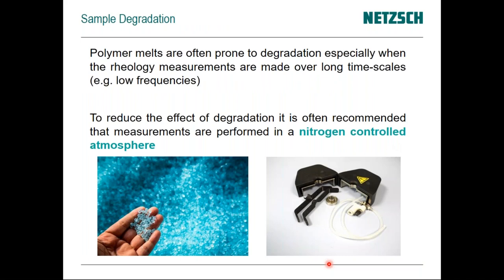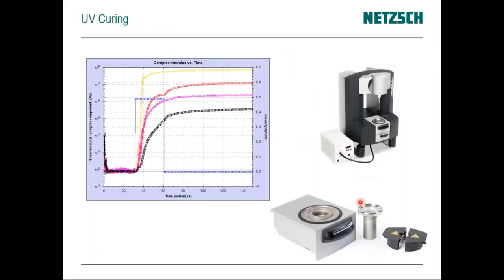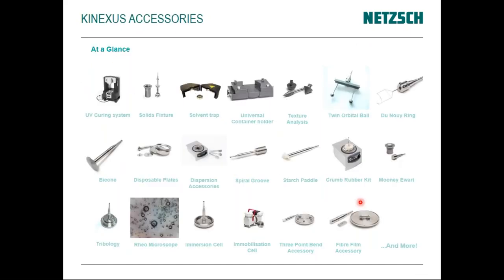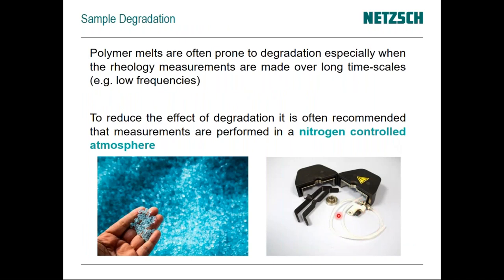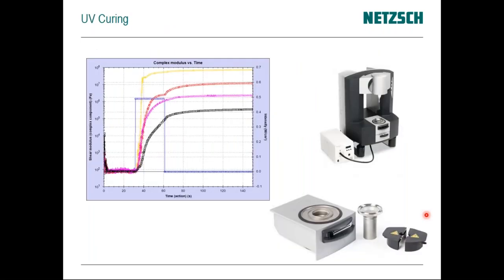Sample degradation can be an issue — measuring polymers at high temperature can cause oxidation. It's a good idea to purge the hood with nitrogen using the inlet nipples on the side of the cover. You'd use a needle valve with about one bar of nitrogen, purging very slowly with just a trickle — you don't want to cool the sample, just maintain a positive atmosphere that expels air rather than allowing moisture in.